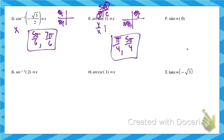Sine inverse of 0: we're doing inverse here. What angle gives us a y-coordinate of 0? Look at your unit circle — there are two places where this happens: 0 and pi.